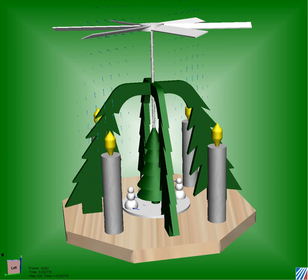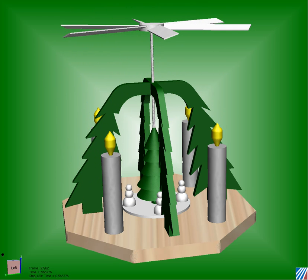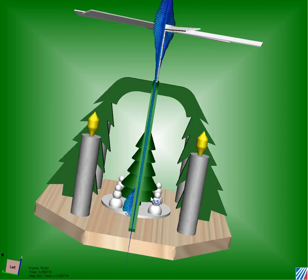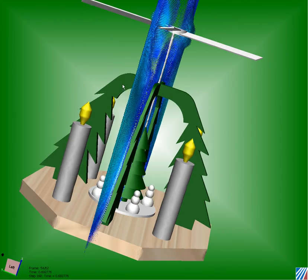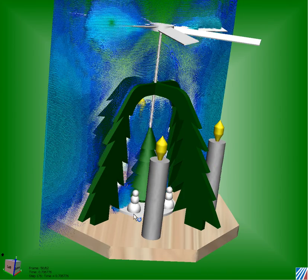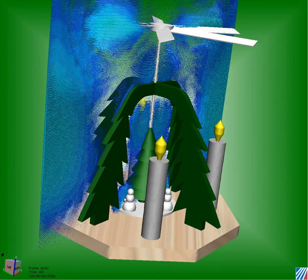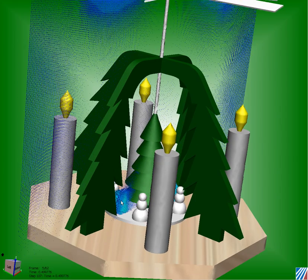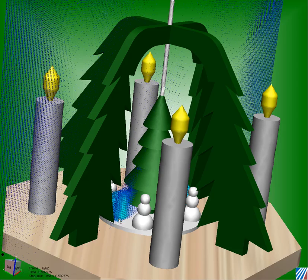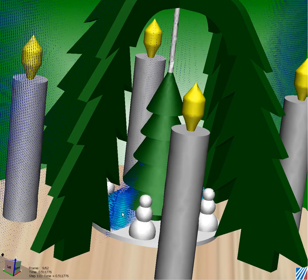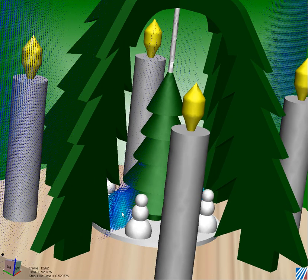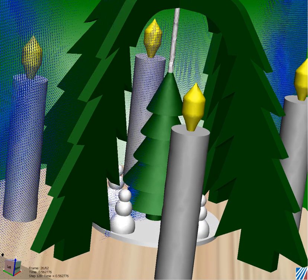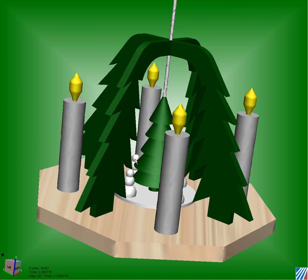We can also see what the local velocities look like of our little snow guys as they're passing in and out of the section plane, and how they're going to interact and what the flow is going to look like around those guys. Some really neat insight to understand the flow profile inside this assembly.